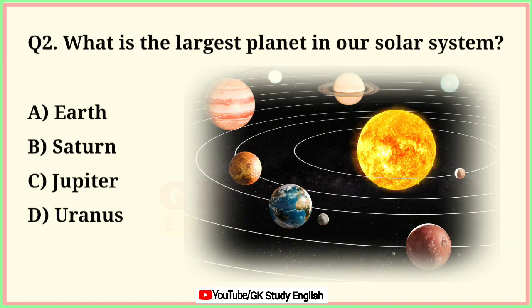Question number 2. What is the largest planet in our solar system? A. Earth. B. Saturn. C. Jupiter. D. Uranus. Correct answer is option C. Jupiter.